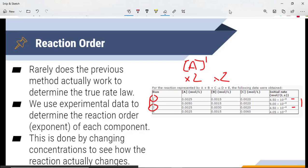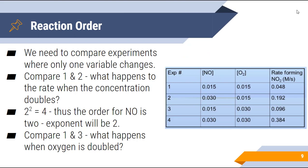We look at kinetic data and that tells us very useful information. Comparing experiments one and two in a new dataset: O stays the same but NO doubles — and the rate forming NO2 actually quadruples. If the amount doubles and the rate quadruples, the order for NO is two, so the exponent is 2. Comparing one and three: oxygen doubles from 0.015 to 0.030 and the rate doubles as well, so the reaction order for oxygen is one.